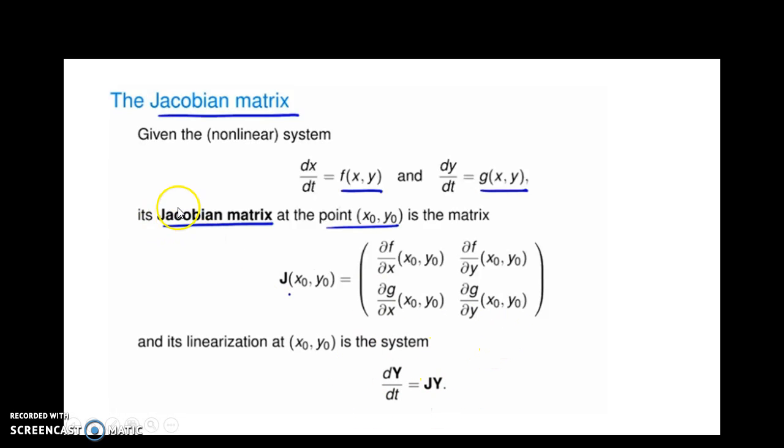This essentially says that if I have a nonlinear system, I can compute the Jacobian matrix by taking the partial derivatives. Now if I try to give you a little bit of intuition here, it might be useful. So this is our A matrix, right? And there are some coefficients here: a, b, c, and d, some constants in that linear system.